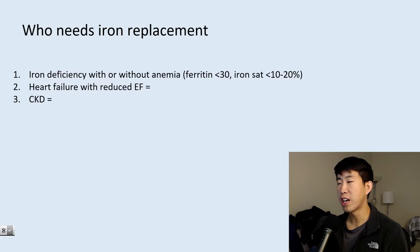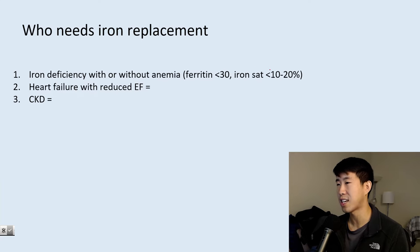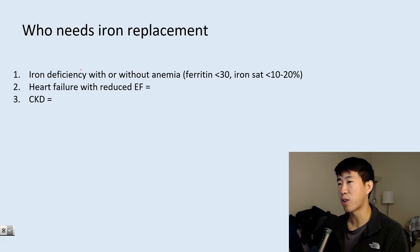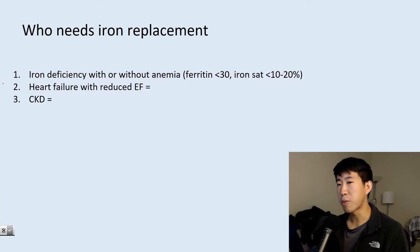Now let's talk about who needs iron replacement. If you have anybody with iron deficiency — defined as ferritin less than 30 and iron saturation less than 10–20% — and they have anemia, they definitely need to be treated. If they don't have anemia, the majority of patients should still receive treatment, though there are specific populations with slightly different criteria.